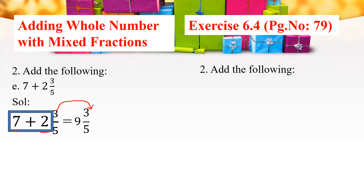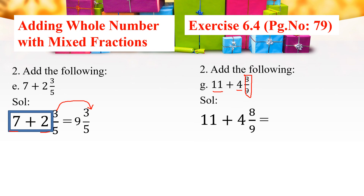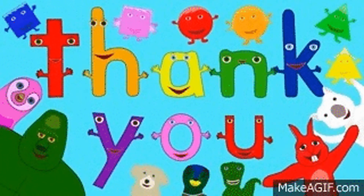Let us see one more example in the same format. We have a whole part and a mixed fraction. So we add the whole parts directly: 11 plus 4 equals 15. Therefore, the answer is 15 and 8 by 9. Thank you, children.